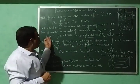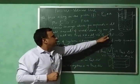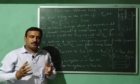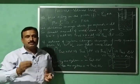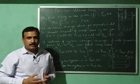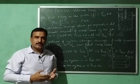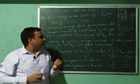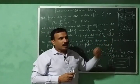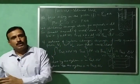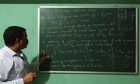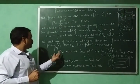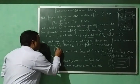So the small amount of work done equals P external into dV. Suppose the system changes from a finite volume V1 to V2. Then from mathematics, the total work done can be calculated by integrating this equation between the limits V1 and V2. So the total work done W equals the integral of P external dV from V1 to V2.